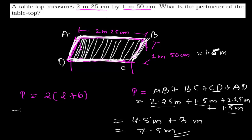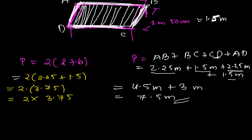In the formula way, if you want to do it by the formula, then you can also do so. 2 times length plus breadth. Length is 2.25 meter and breadth is 1.5 meter. So 2 times, 2.25 and 1.5 will be 3.75, and twice that, 2 times 3.75, will be 7.5 meter, or you can say 750 centimeter.